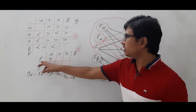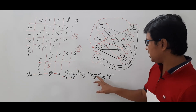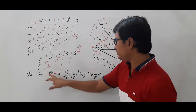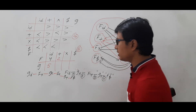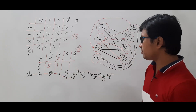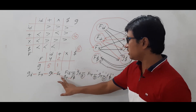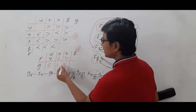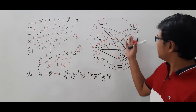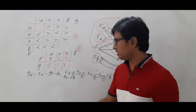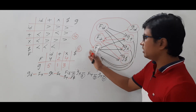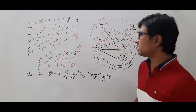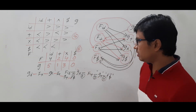f(star) has a longest path of length 4. g(star) has a longest path of length 3. f(dollar) has no outgoing edges so its value is 0. g(dollar) also has no outgoing edges so its value is 0. We have now successfully converted the relational table into the functional table.